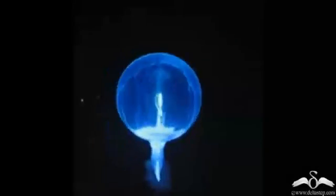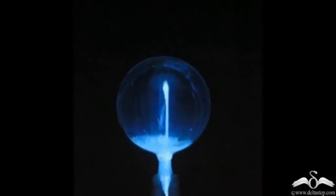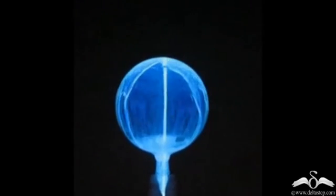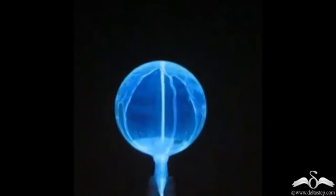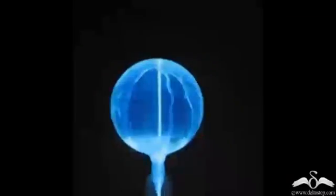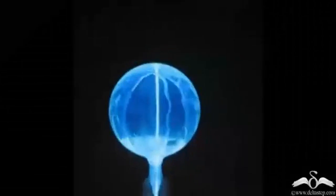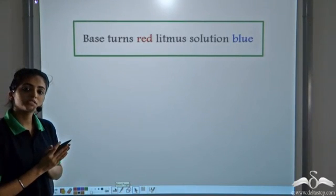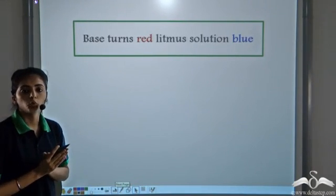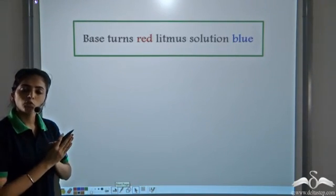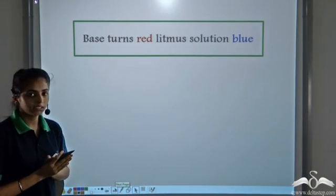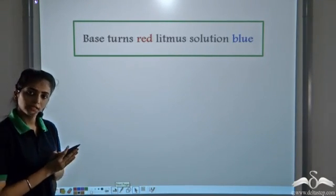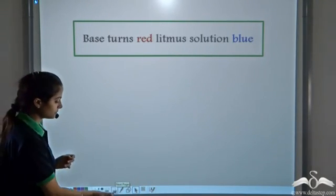You see a blue fountain being formed. A base turns red litmus solution blue. Let's see what was happening in this case.